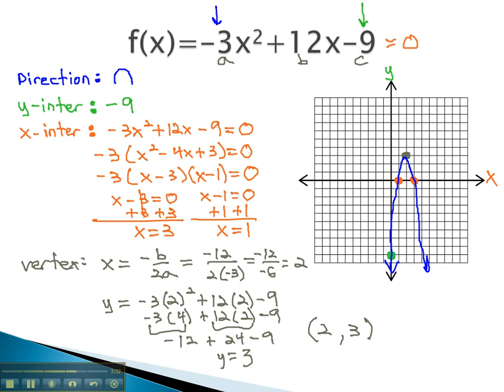To graph a parabola, we have to identify all this important information. The direction, if the a is positive or negative, the y-intercept which comes from our c, the x-intercept which comes from the equation equaling 0, and the vertex which has two parts.